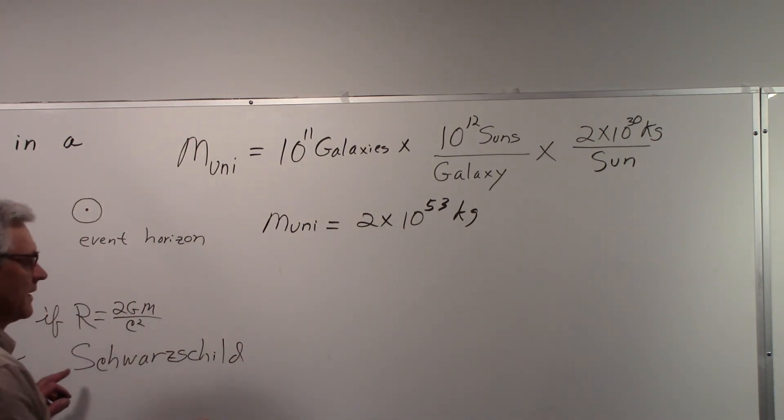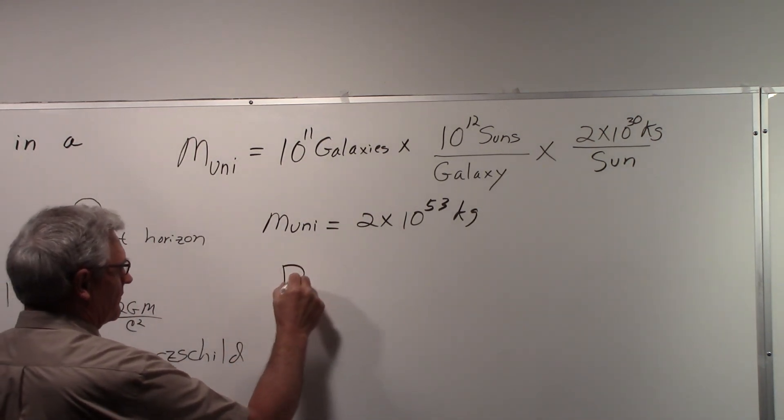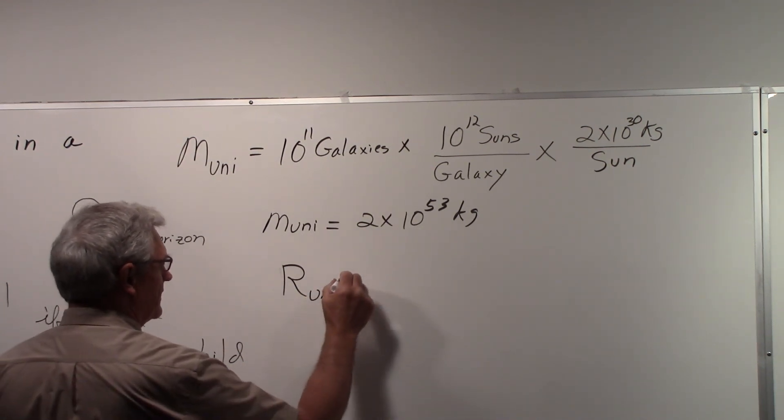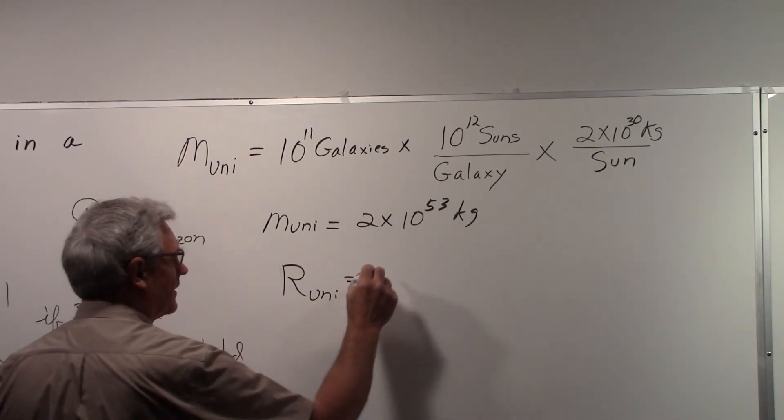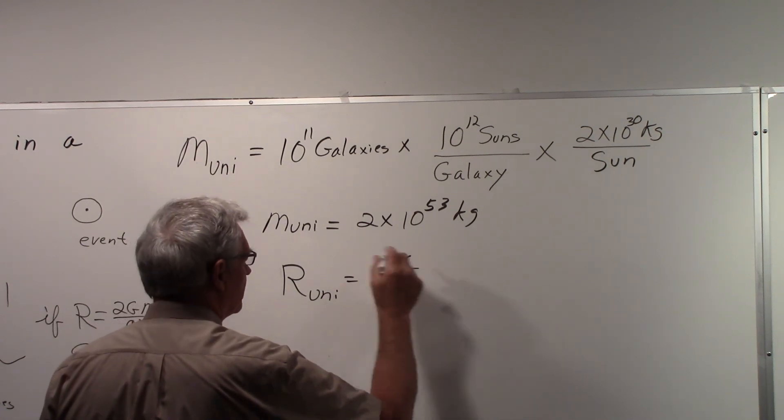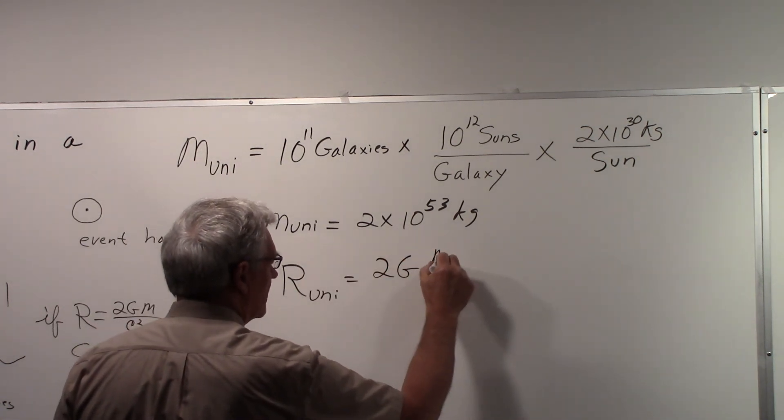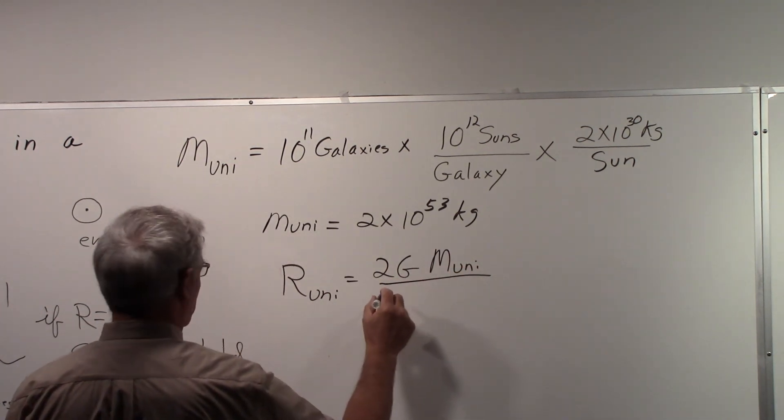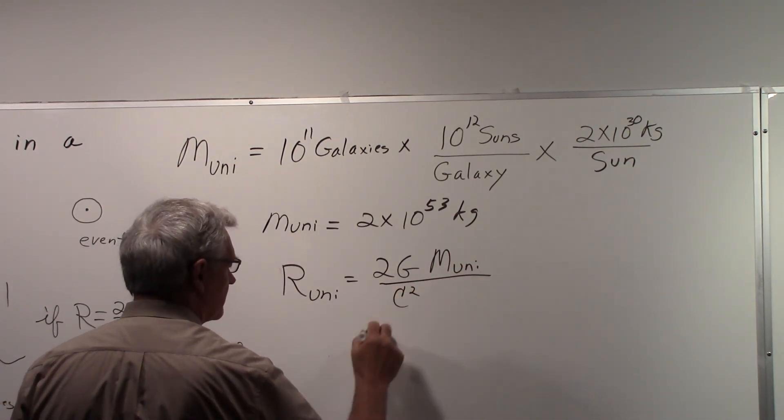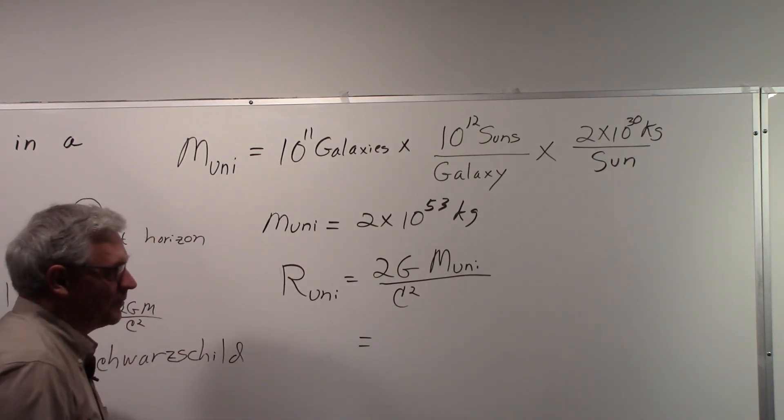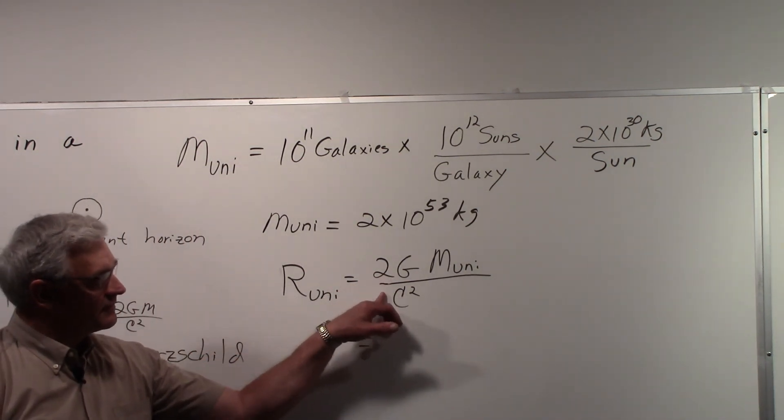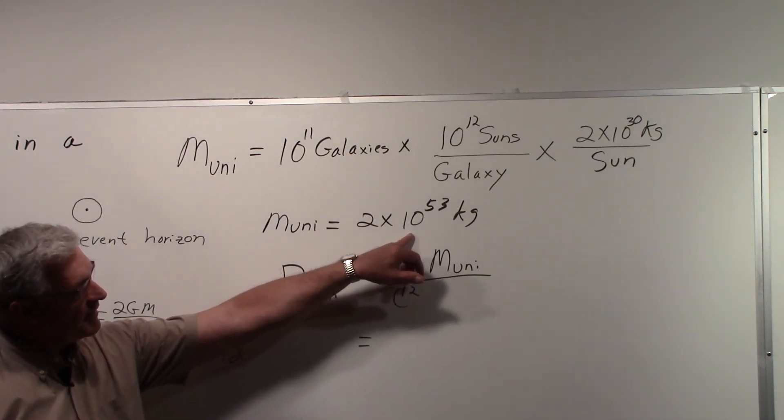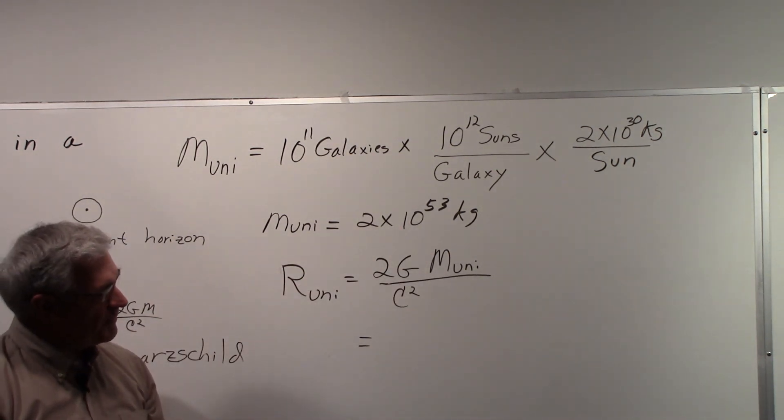So now we can say that the radius of the universe is equal to 2G M of the universe, mass for the universe, over c squared. And if we put in the right value for G, for c, using MKS units throughout, and this for the mass of the universe, we'll get a very large number.